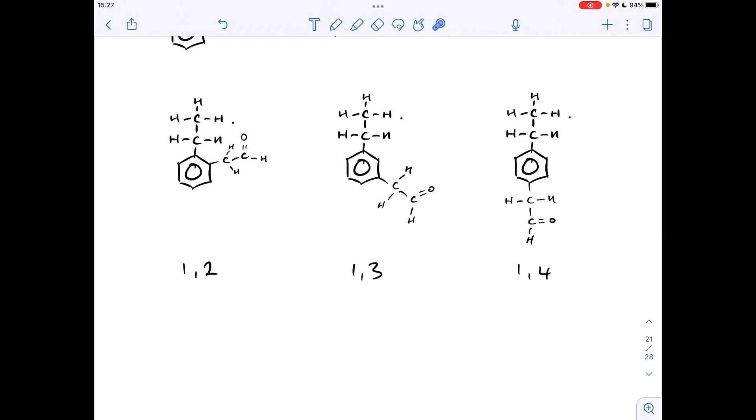So here are our options, so we could have the 1,2 di-substituted benzene ring, could have the 1,3, or we could have the 1,4. So all we need to do is look at how many carbon environments each of these has got, and obviously the one that has 8 is going to be the answer.